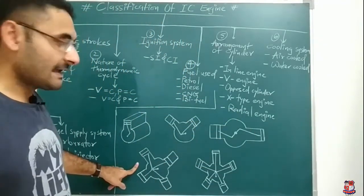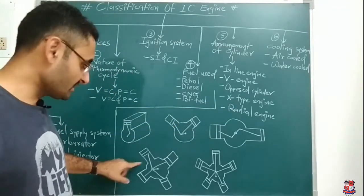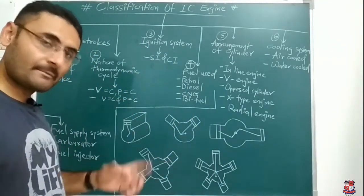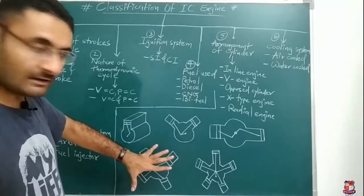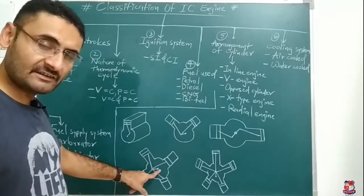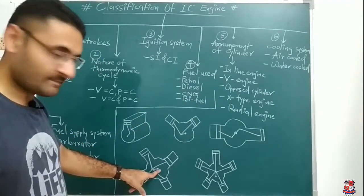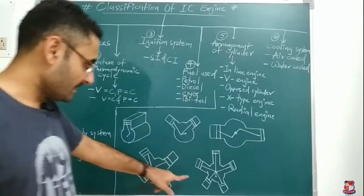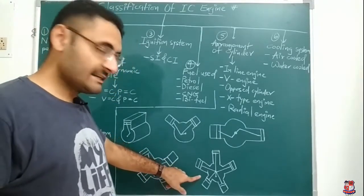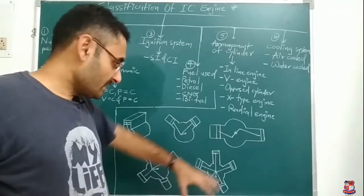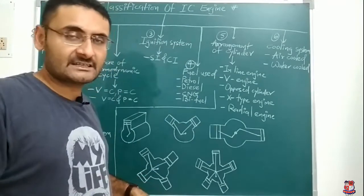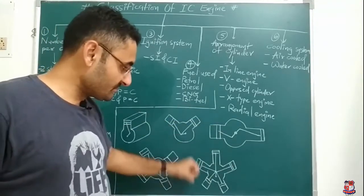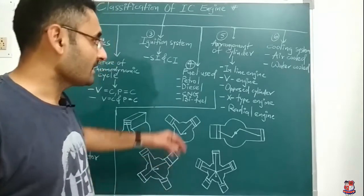Next is known as X-type engine. In an X-type engine, the arrangement of cylinders is in the manner of a cross — like the English alphabet X. In this also, only a single crankshaft is used, and all the power produced by the pistons is transmitted to that single crankshaft. The last one is known as radial engine. In a radial engine, cylinders are located in a radial direction. Again, in the radial engine, only a single crankshaft is used, and all the power produced by all cylinders is transmitted to that single crankshaft.